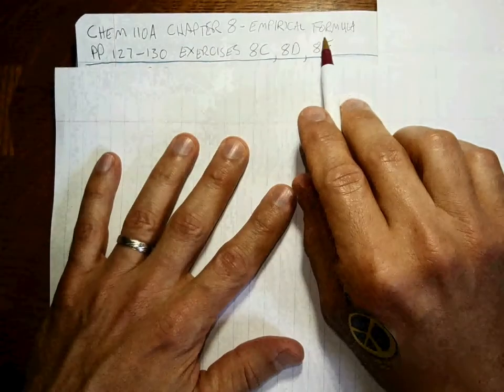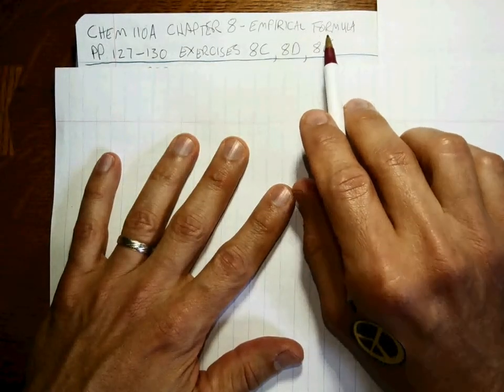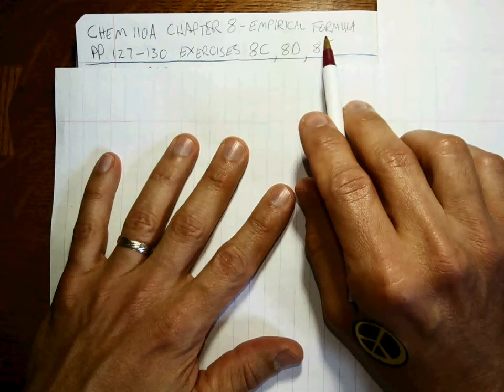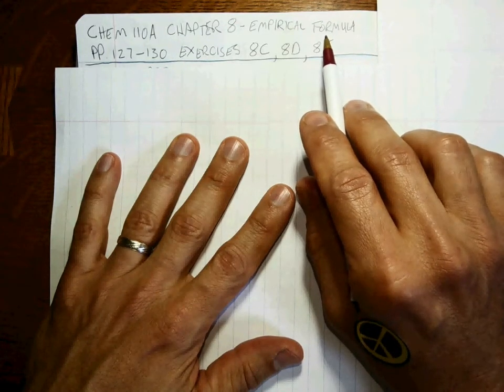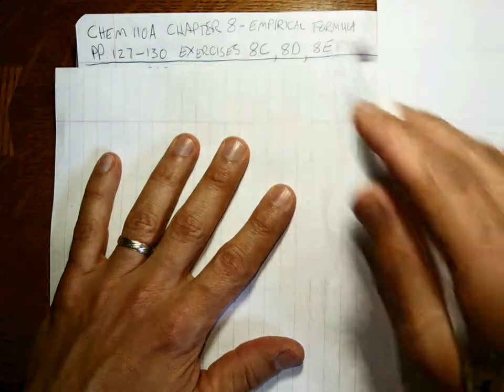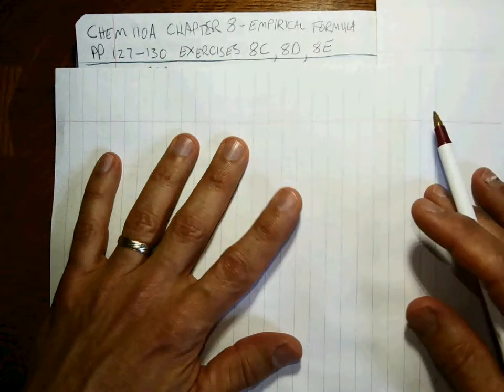Okay, Chapter 8, Empirical Formula. You're going to have a lot of problems. Five of them over your next two finals in prep chem. So be ready for this. These are exercises 8C, 8D, and 8E. So what are we talking about with empirical formula?